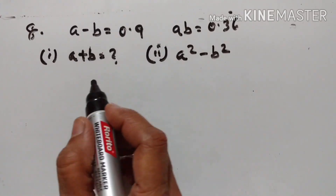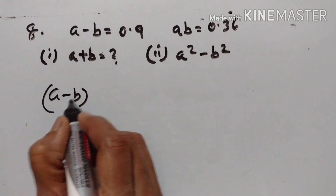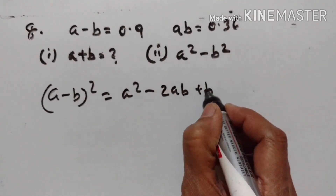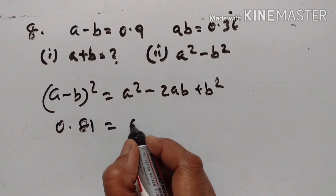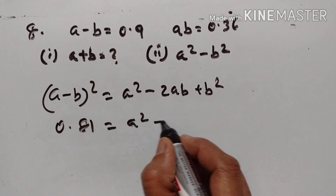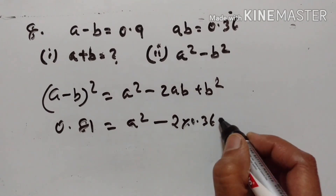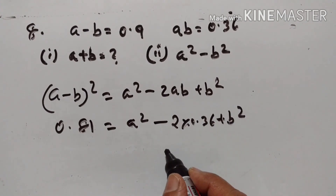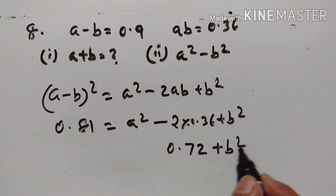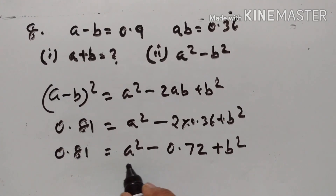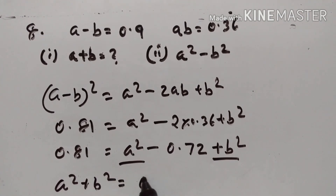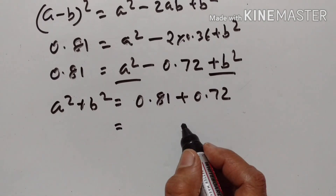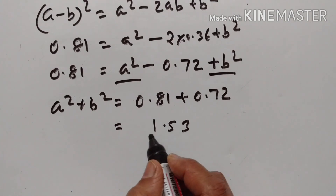Problem 8: The value of A−B is given; we have to find A+B. A−B = 0.9, AB = 0.36. Using (A−B)² = A² − 2AB + B²: 0.9² = 0.81 = A² − 2×0.36 + B². 2×0.36 = 0.72. Therefore A² + B² = 0.81 + 0.72 = 1.53.